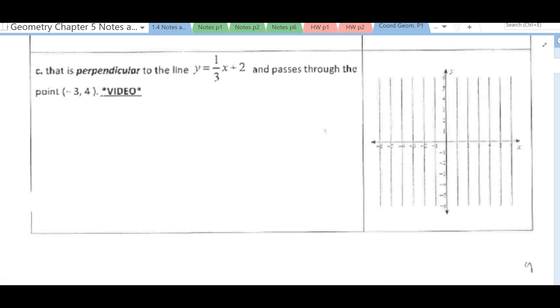We want to write and graph the equation of the line that's perpendicular to the line y equals one-third x plus 2 and passes through the point (-3, 4).